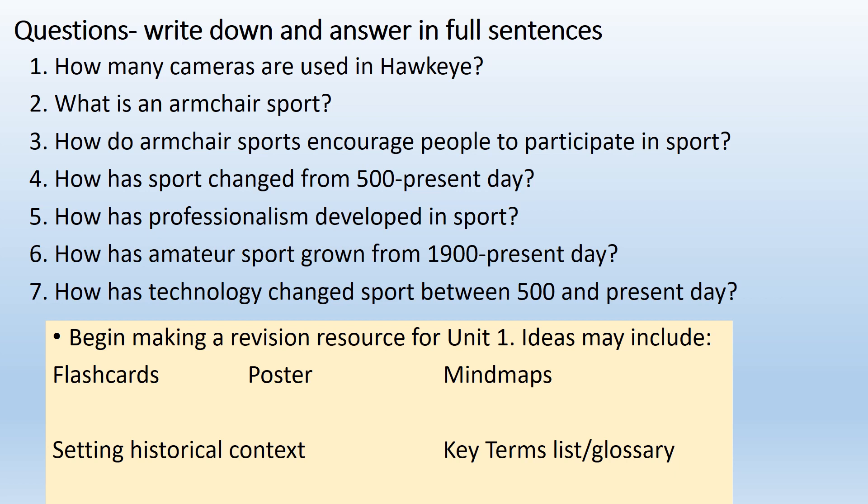So we've got two things to do: a series of summary questions and then a final revision resource for Unit 1. Question one: how many cameras are used in Hawkeye? Question two: what is an armchair sport? There's a clear description in the reading. Question three: how do armchair sports encourage people to try to participate in sport? Question four: how has sport changed from 500 AD to present day? Make sure you're discussing the three historical eras — the medieval era, the early modern era, and the modern era. Question five: how has professionalism developed in sport? Discuss things like boot money and broken time payments.